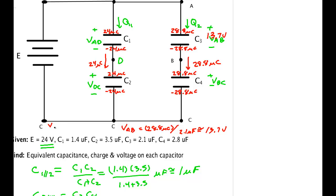V_BC is 28.8 microcoulombs over 2.8 microfarads. We get 10.3 volts. 10.3 plus 13.7 gives us 24 as it should.